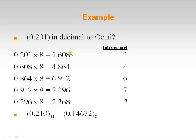Multiply 0.201 × 8: store the integer part. Then multiply the fractional result × 8, getting 4; store that. Continue: fractional result × 8 gives 6, then 7, then 2. Either stop at five to six precision values or when the fractional part becomes zero. Then read the stored integer parts from top to bottom to get the resultant conversion.